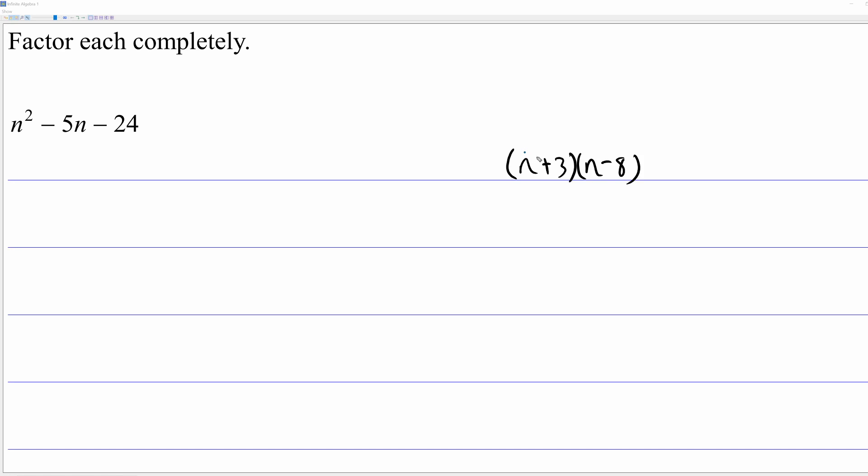If you think about how to multiply these two linear binomials together using the distributive property, you would draw that arrow in blue. n times n, that would give you n squared. I'm going to do this not in the usual order. I'm going to do the last arrow in red. 3 times negative 8 is negative 24.